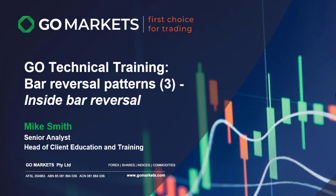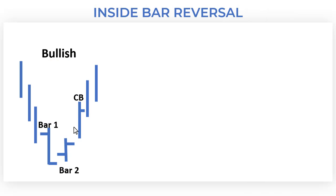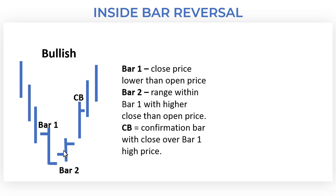Don't forget to subscribe. Let's have a look at how the inside bar is formed. It is a two-bar pattern. On the bullish side, we have a trend moving downwards: bar one closes near its low, and bar two is completely inside the range of the previous bar. We then get the confirmation of the reversal on the third bar. Bar one close price is lower than the open price, bar two is within the range of bar one with a higher close than the open.